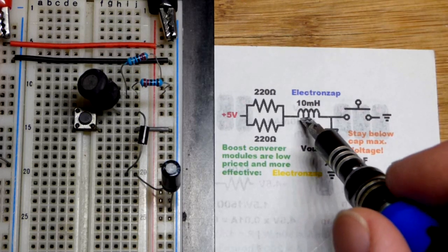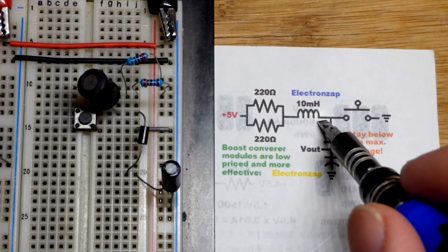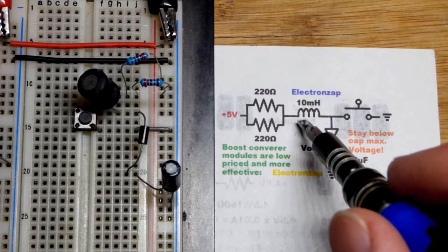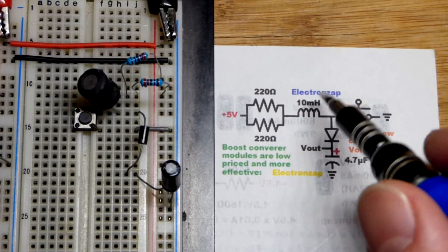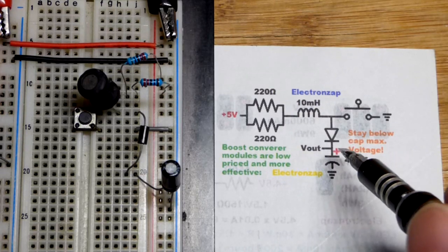inductors have the basic property that they keep passing current even if you cut off the supply voltage. That's only as long as their stored magnetic charge lasts. They have a magnetic field that collapses and keeps pushing the current into the capacitor.